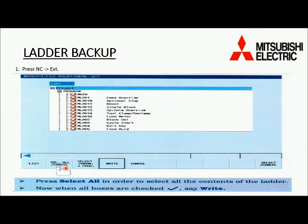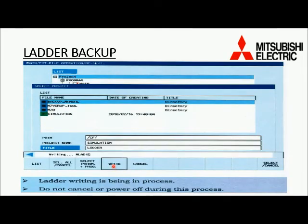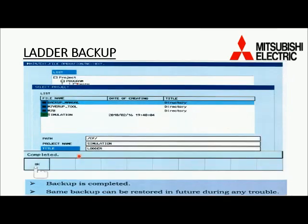Press the second option NC to extension. In the new screen, press select all or cancel, then press write. After filling in the path — which is the device where you want to save — along with the project name and title of the ladder, press the save button. Ladder writing will begin and will show complete after some time. Press OK when complete is displayed on screen.